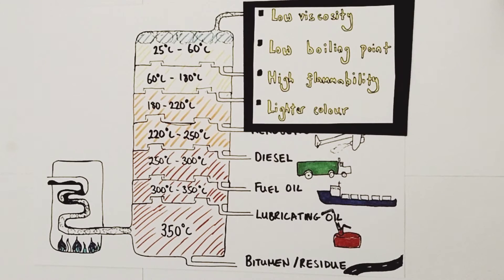Fractions collected at the top of the column will have very different physical attributes compared to those at the bottom due to them being much smaller molecules. We'd expect them to be low viscosity - they'd flow very easily. They'll have low boiling points and high flammability. They ignite with great ease and burn very effectively, and they'd be lighter in color, either colorless or light yellow in appearance.